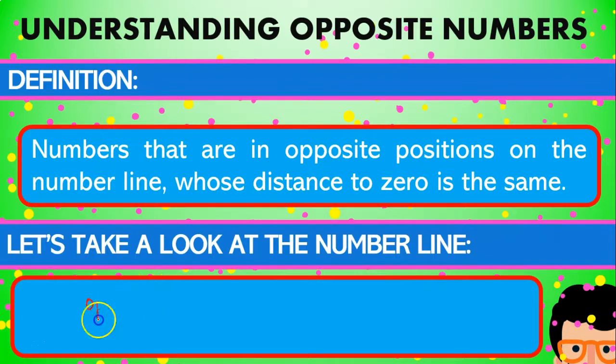Meaning that the opposite value of 3 is minus 3. So the opposite value of 100 is minus 100. Do you see where I'm going here?